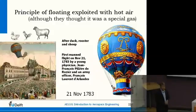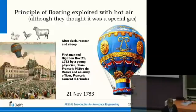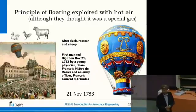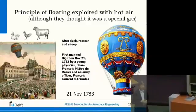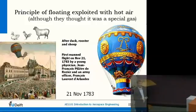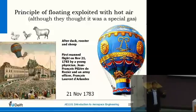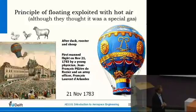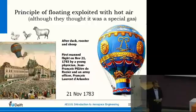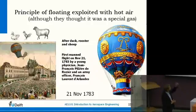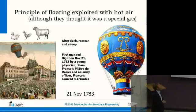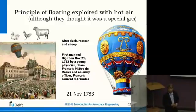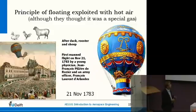Why did they choose those three animals? The duck could fly, so it served as a control group — if something happened to the duck, it must have been the craft, not the altitude. The rooster is a bird with the same physiology but doesn't fly high, so you could see whether effects were caused by bird physiology or by being unaccustomed to flight. And the sheep is the model human — a mammal — and if it survived, probably a man would too. That's why they chose those three animals.